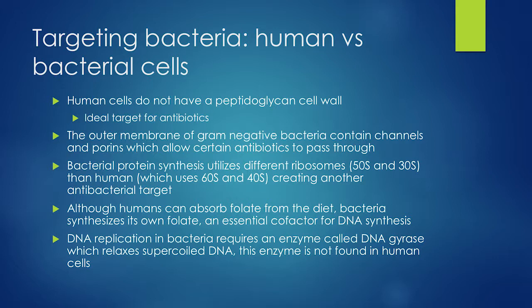How do we target bacterial cells versus human cells? We give a drug that attacks bacterial cells but not our cells. Human cells do not have a peptidoglycan cell wall — that's an ideal target. The outer membrane of gram negative bacteria has specific channels and porins that we design antibiotics to attack. Bacterial ribosomes are the 50S and 30S subunits, different from what we use as humans.